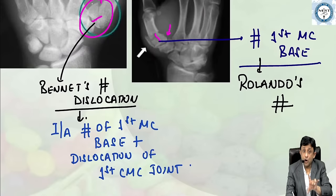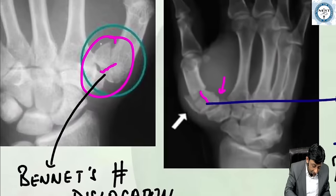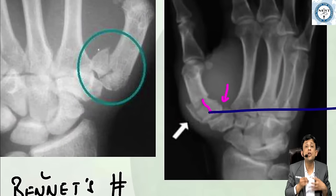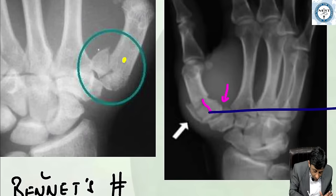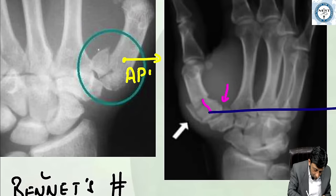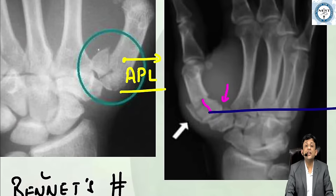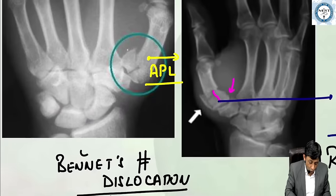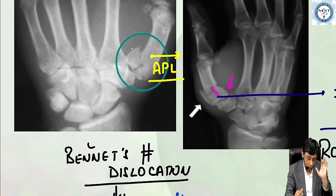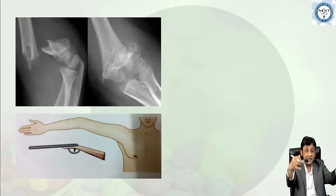In Bennett's fracture dislocation, the shaft fragment is pulled laterally by the forces of abductor pollicis longus, which does not allow the joint to maintain congruency. This is exactly why we cannot restore congruency conservatively in a Bennett's fracture dislocation. Both fractures are important, but when there is subluxation or dislocation, it needs to be reduced and fixed surgically.